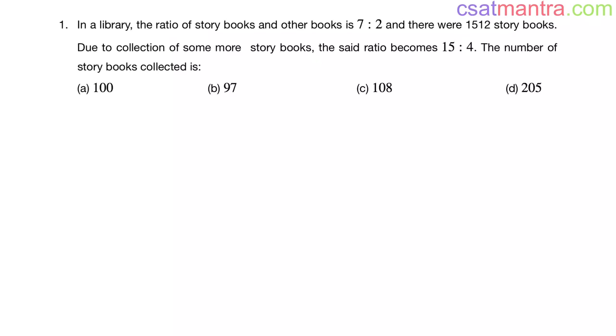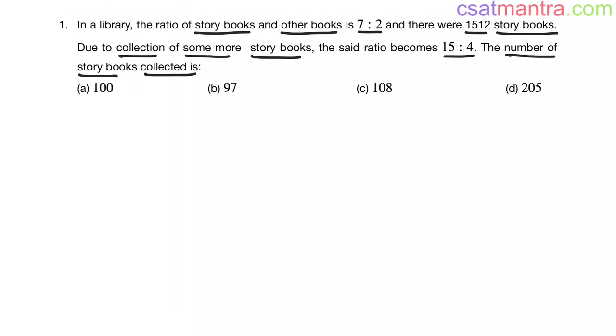In a library, the ratio of storybooks and other books is 7:2 and there were 1512 storybooks. Due to collection of some more storybooks, the said ratio becomes 15:4. The number of storybooks collected is — we will solve this problem in two methods. The first is the conventional method and the second is without using pen and paper, with the help of options only.